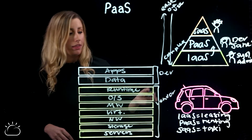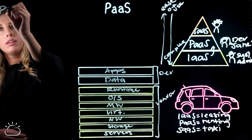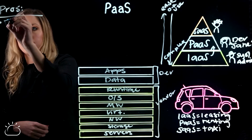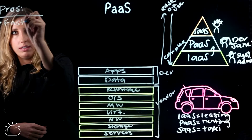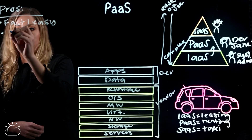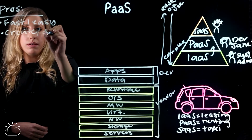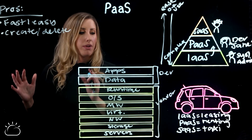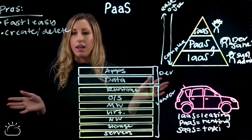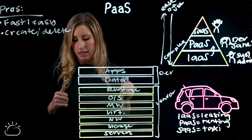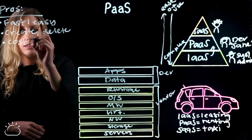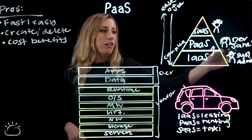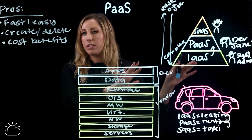There are some pros and cons with Platform as a Service, just like with leasing, renting, or getting a taxi. The pros are: it's generally quite fast and easy to get an app up and running, which is great. It's easy to create and delete resources — important for, say, running a proof-of-concept app for a conference where you want to spin it up right before and delete it right after. You're not paying for the whole month, so that results in some cost benefits. Another cost benefit is that you don't have to pay for a full-time system or IT admin to run this app — they can focus on something else.